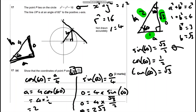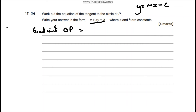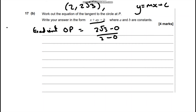So what we can do is work out the gradient of the normal — that's the gradient of OP. That's going to be the difference in y over the difference in x. Using point P (2, 2√3) and the origin (0, 0): it's (2√3 − 0) over (2 − 0), because we're using the other coordinate (0, 0), which is the centre. So the gradient of OP is 2√3/2, which is just √3.